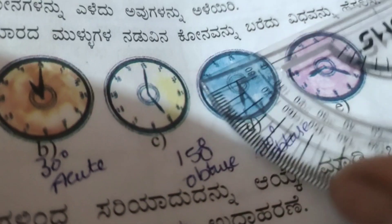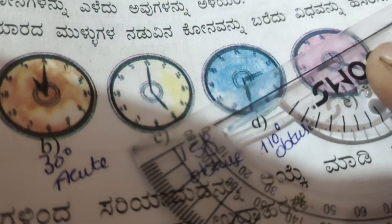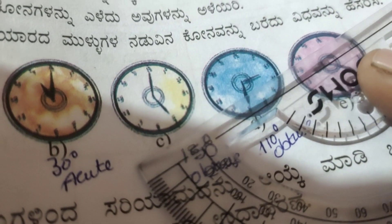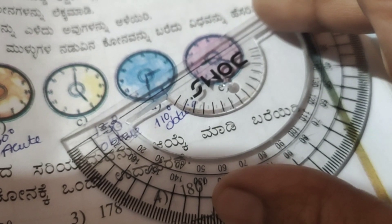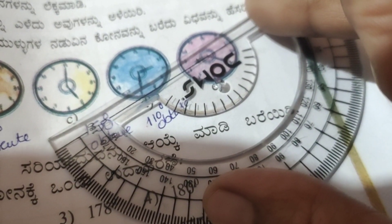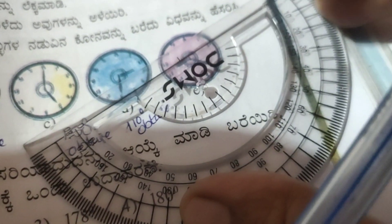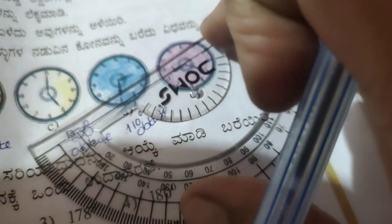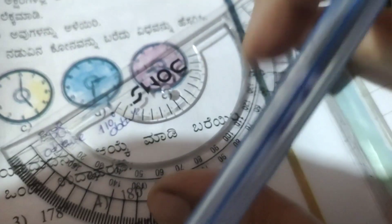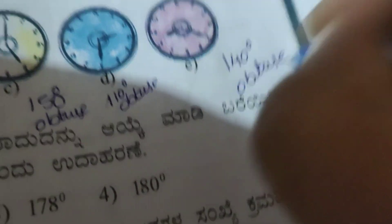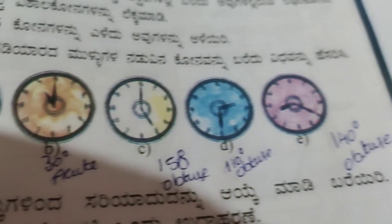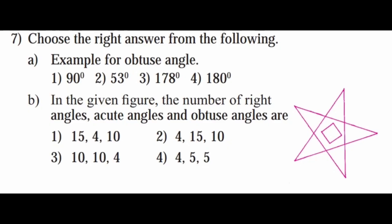For the fifth clock, measuring the angle between the hands gives approximately 130 to 140 degrees. So this is 140 degrees — this is also an obtuse angle. Now let's move to the seventh question.